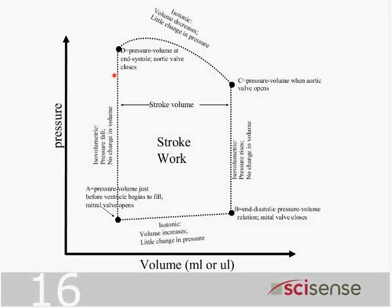The aortic valve closes, but because the aortic valve is closed on one side and the mitral valve has not yet opened on the other side, pressure falls but there is no change in volume. This is called isovolumetric relaxation — no change in volume, but a big change in pressure.